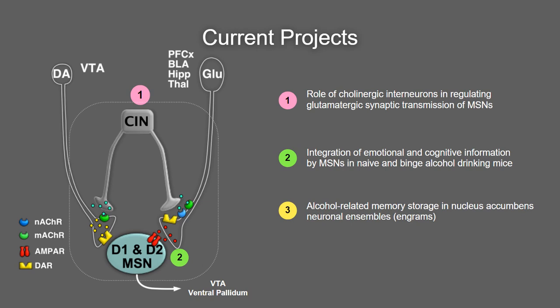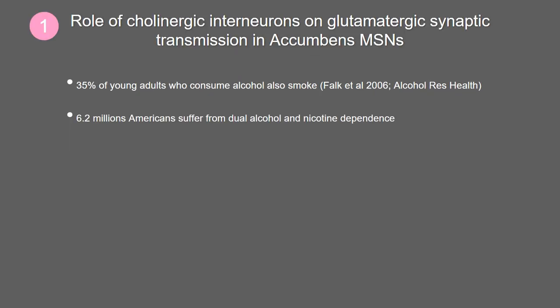Today I'm going to talk about the three projects we have going on in the lab at different stages of advancement. The first has to do with cholinergic interneurons and their role in regulating glutamatergic synaptic transmission in MSNs. The second focuses specifically on glutamatergic synaptic transmission coming from the cortex and the BLA. And finally, the third is about neuronal ensembles, also called engrams, in relation to binge alcohol drinking.